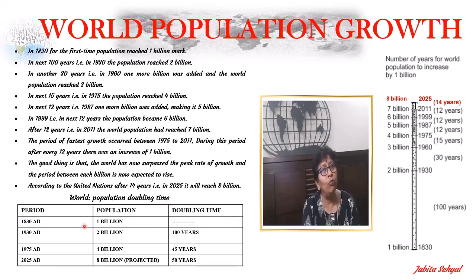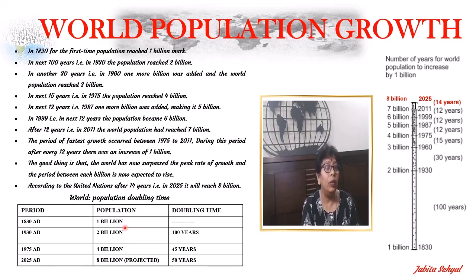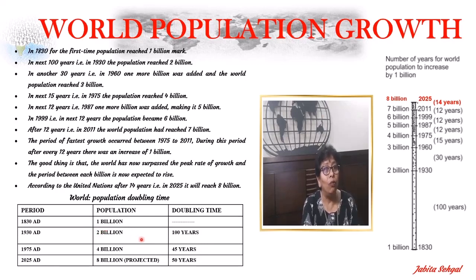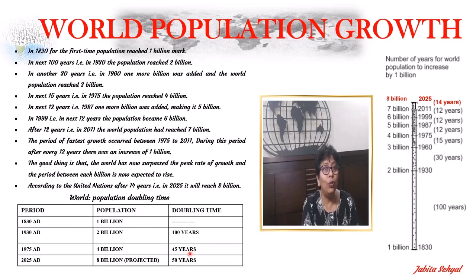The world population took more than a million years to attain the 1 billion mark in the year 1830. But it took only 100 years for the population to rise from 1 billion to 2 billion — doubling in 100 years. Then, from 2 to 4 billion, it took 45 years. And to reach from 4 billion to 8 billion, it will take 50 years.